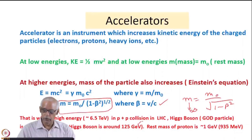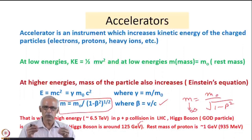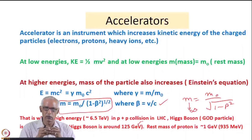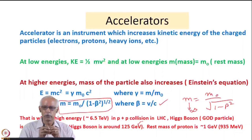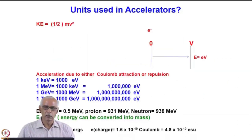You might be wondering how a 125 GeV particle can be produced when the rest mass of the colliding proton is roughly about 1 GeV (actually 938 MeV). Two 1 GeV protons, when they collide and interact with each other, produce a Higgs boson of 125 GeV. That is all because of the increase in mass due to the increase in velocity — that's the reason.